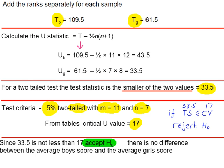So our conclusion is accept H0. There is no significant evidence that there is a difference between the average scores for boys and girls.